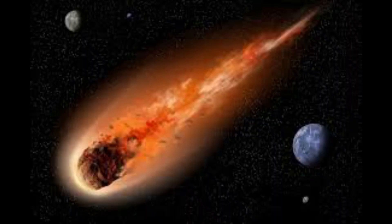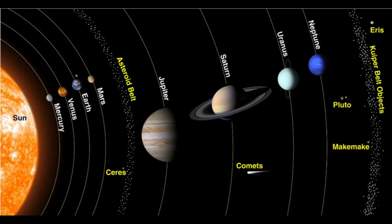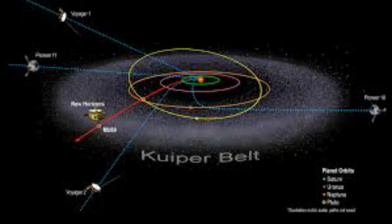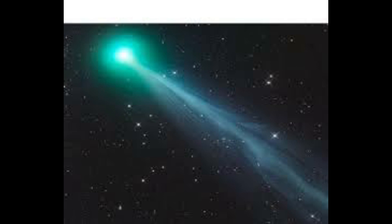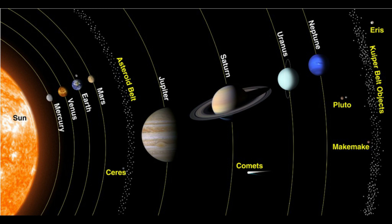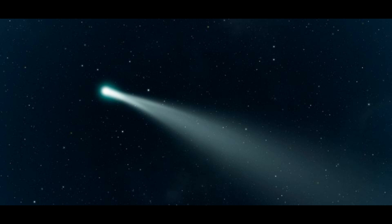Now let's look at the comet. The comet is formed in the solar system, beyond Neptune and Pluto, in a certain region we call the Kuiper Belt. In this area, the comet is formed and it is full of ice particles. The Kuiper Belt orbits like the planets.